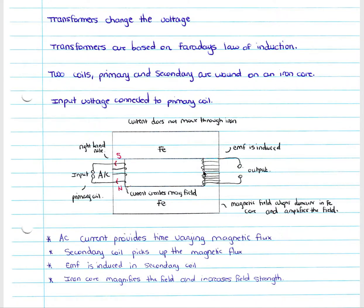An EMF is induced in your secondary coil. If they ever ask you what the function of the iron core is — it is to magnify the field and increase your field strength. It simply magnifies the field given off by your primary coil so that it can induce a current or an EMF in your secondary coil.